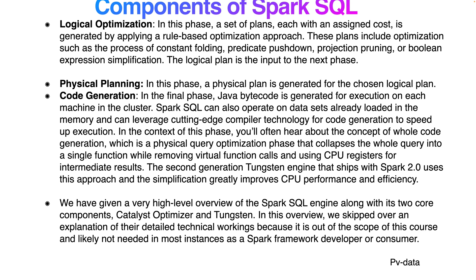In this context, you will often hear about the concept of whole-stage code generation, which is a physical query optimization technique that collapses the entire query into a single function, eliminating virtual function calls and using CPU registers for intermediate results. This second-generation Tungsten engine was introduced in Spark 2.0 and generally improves CPU performance efficiency.